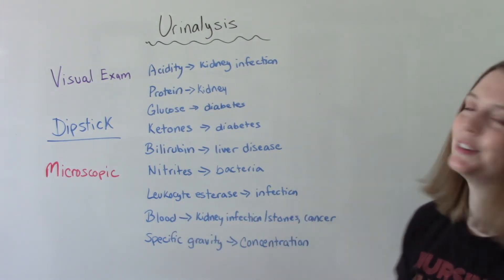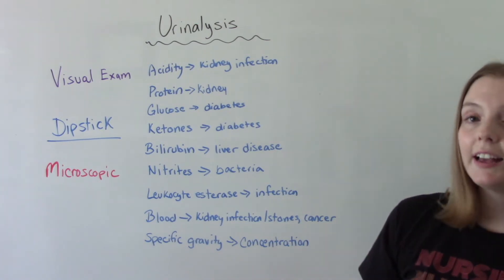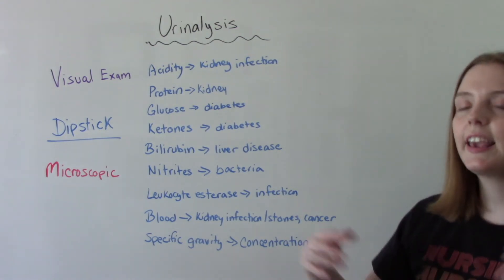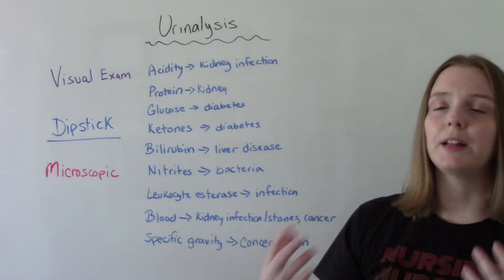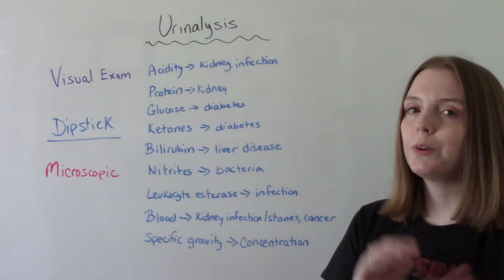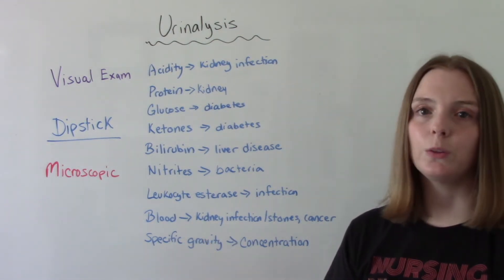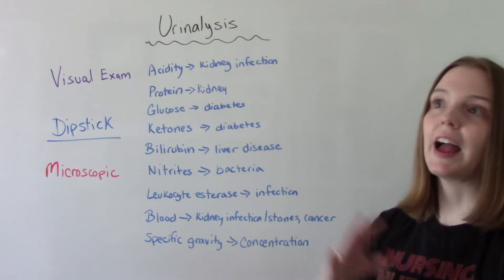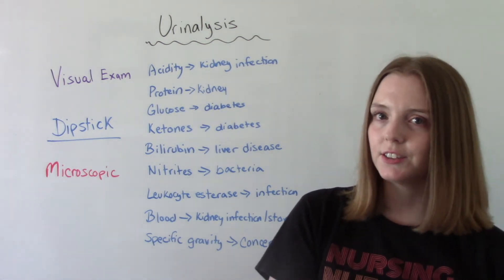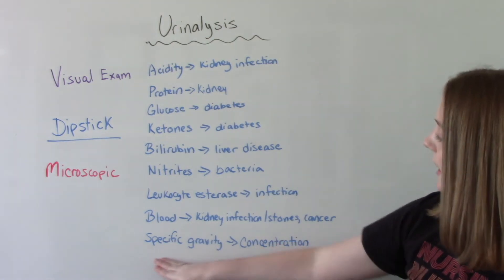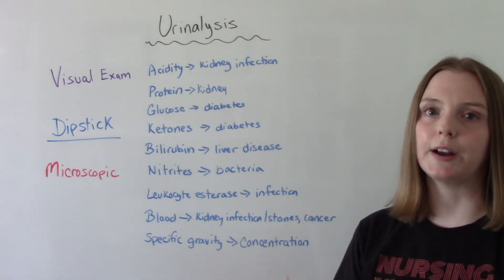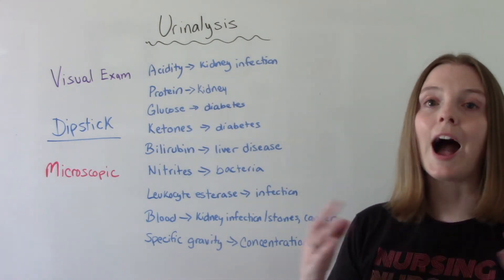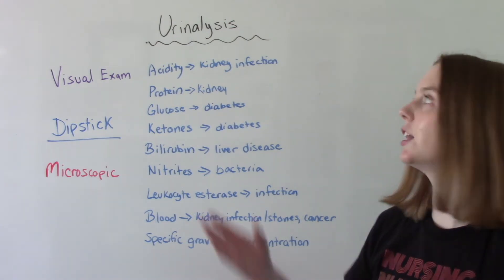Leukocyte esterase is also related to infection. If there's blood in the urine, that could be a couple of different things — it could be signs of a kidney infection, kidney stones, or cancer such as bladder cancer or kidney cancer. One thing we do have to be careful of: sometimes if a woman is menstruating and a little bit of that blood gets into the urine sample, that can affect the results, so we need to know that about our patient. And then finally, the specific gravity — this is the concentration of the urine, which has to do with fluid status and how hydrated the patient is at the time of collecting the sample.